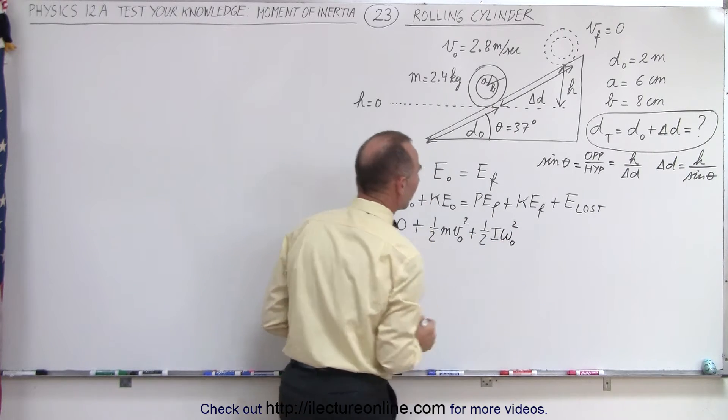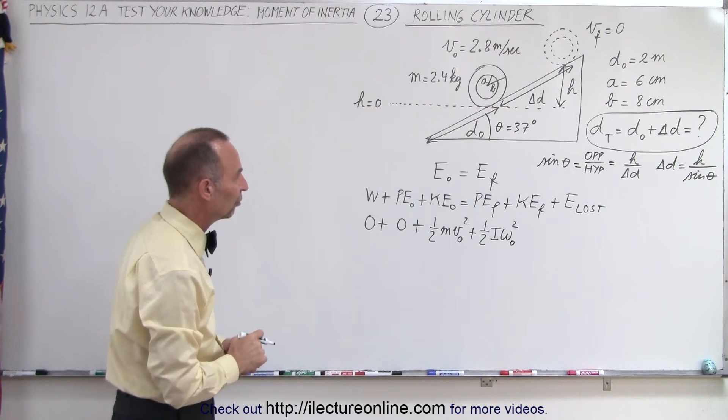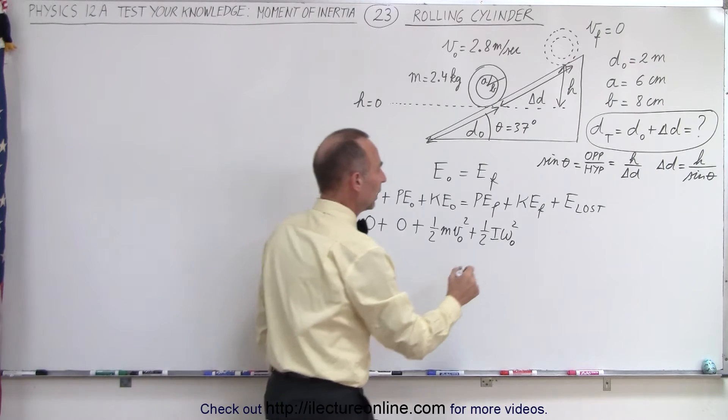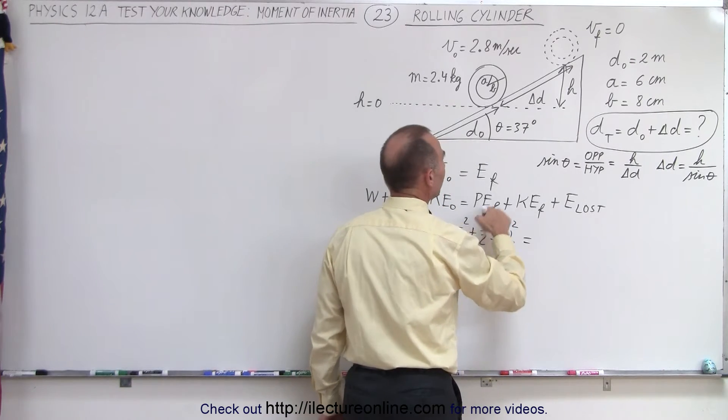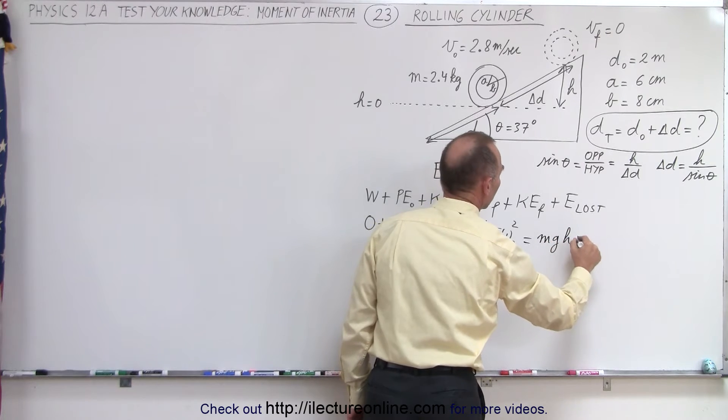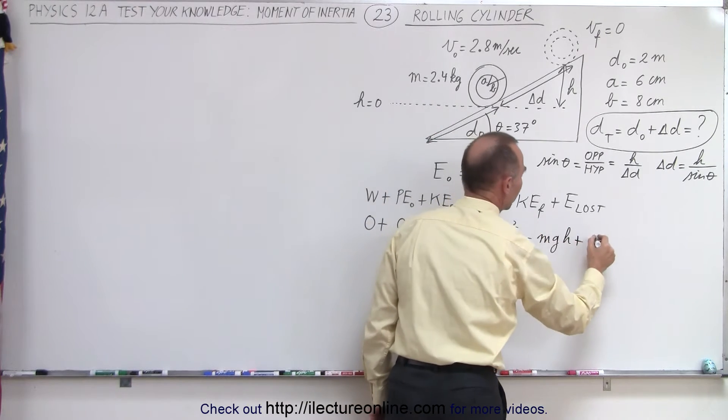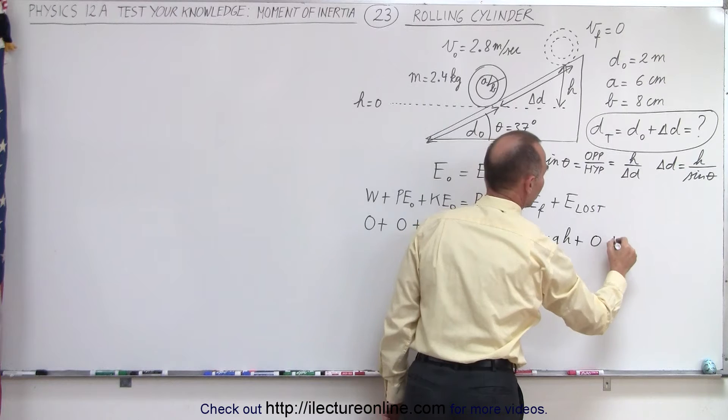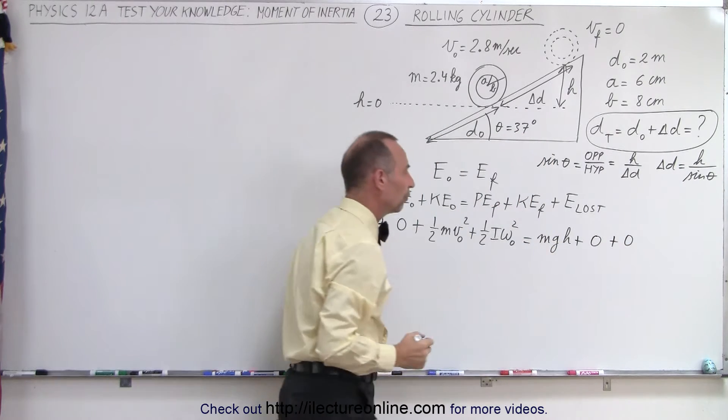So it will be one-half mv squared plus one-half i omega squared. And of course, that's initial v and initial omega. So we have both kinetic energies to contend with. At the end, we have the potential energy final, which is going to be mgh. The kinetic energy final will be zero, because it's now come to a stop, and there's no energy lost due to friction.